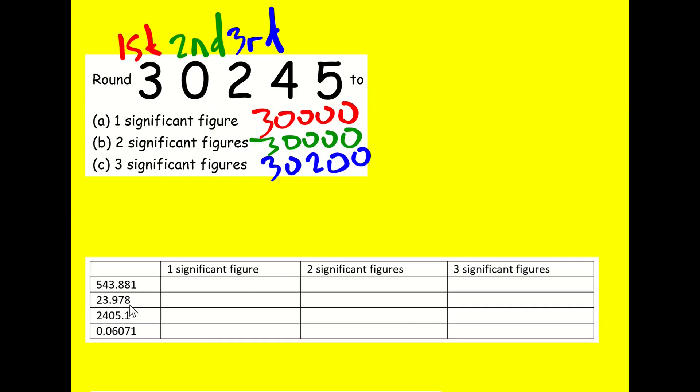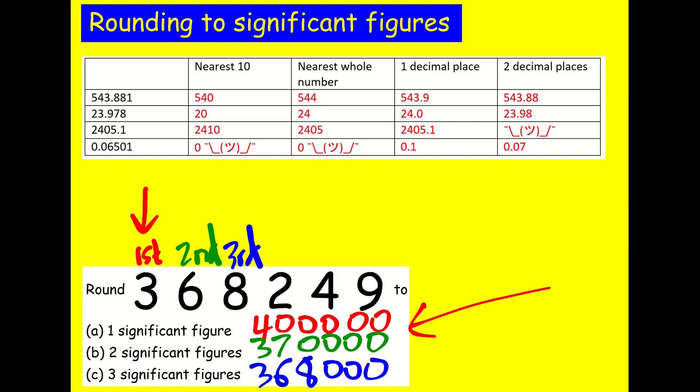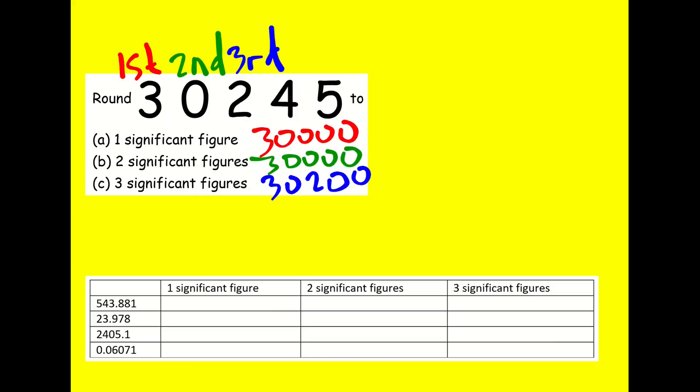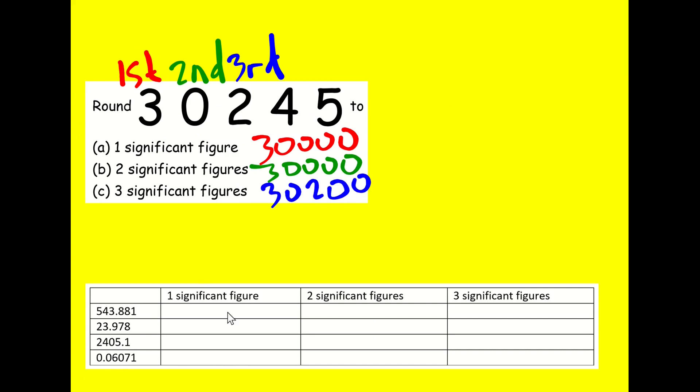Okay, returning to our original problem. If you remember, it wasn't meaningful to round them all to these different amounts. So it didn't make any sense really to round 2,405.1 to two decimal places. But I want you to now to round these numbers to one significant figure, two significant figures and three significant figures. And you should see they all make sense now. So that's the point of doing this. So please pause the video and have a go.